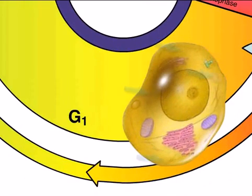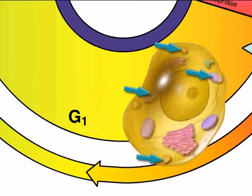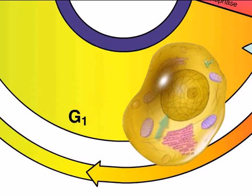In G1, the cell synthesizes DNA and protein and increases organelle and cytoskeletal elements. The chromatin consists of long, slender rods jumbled together in the nucleus.